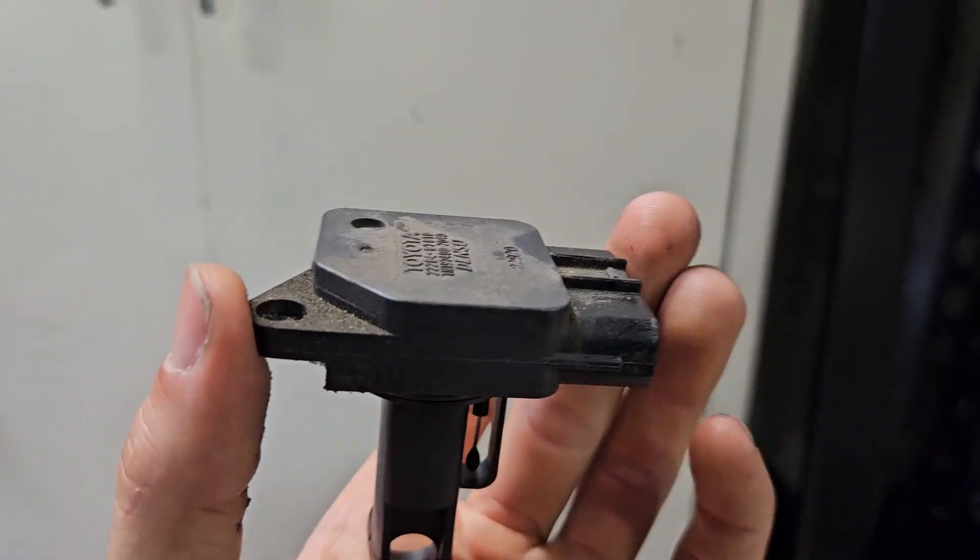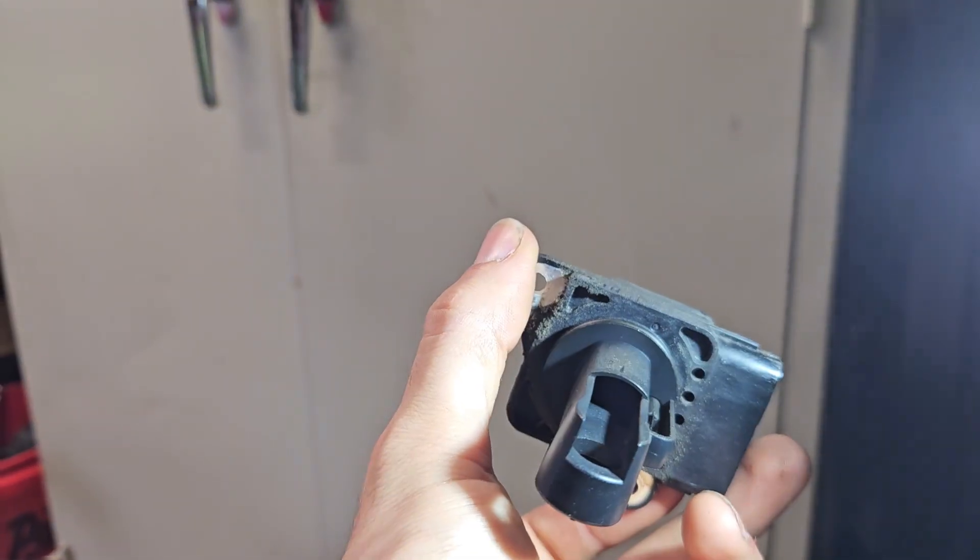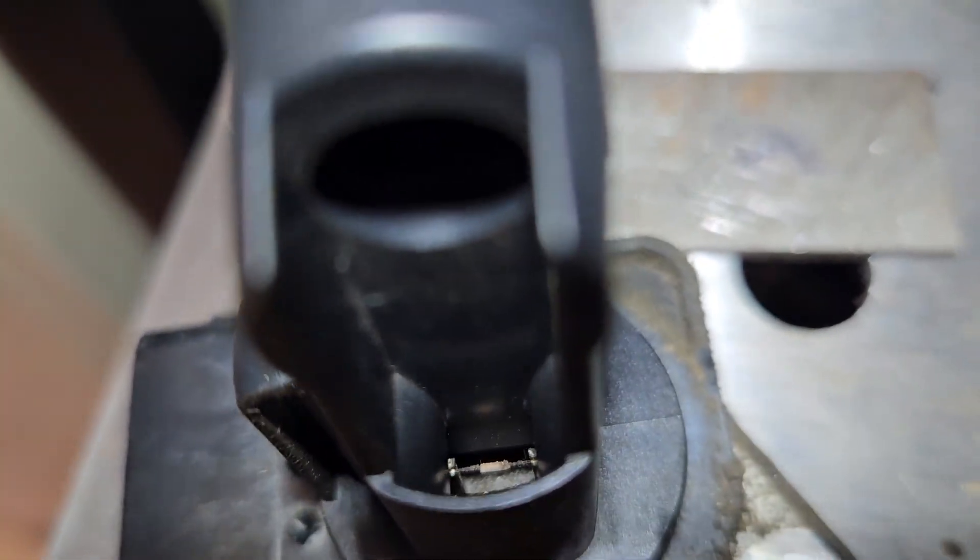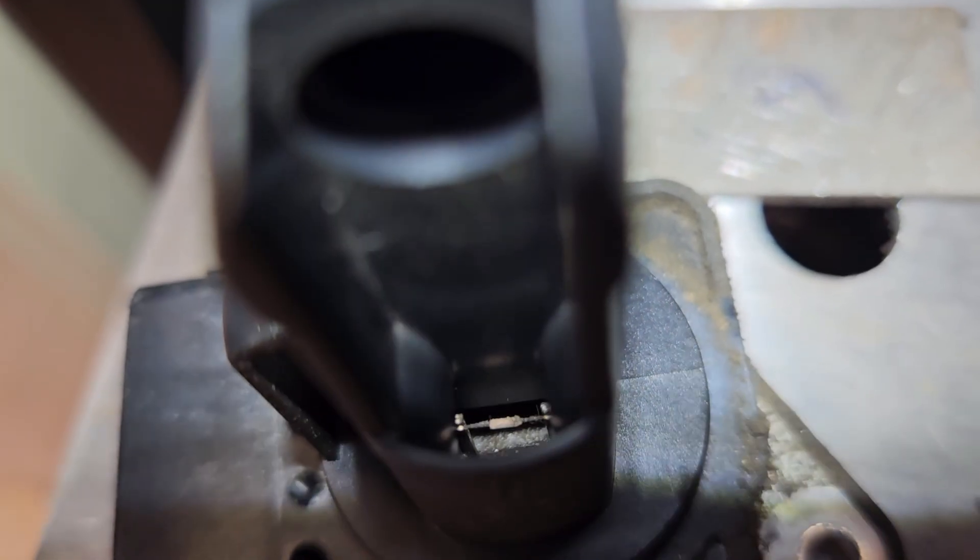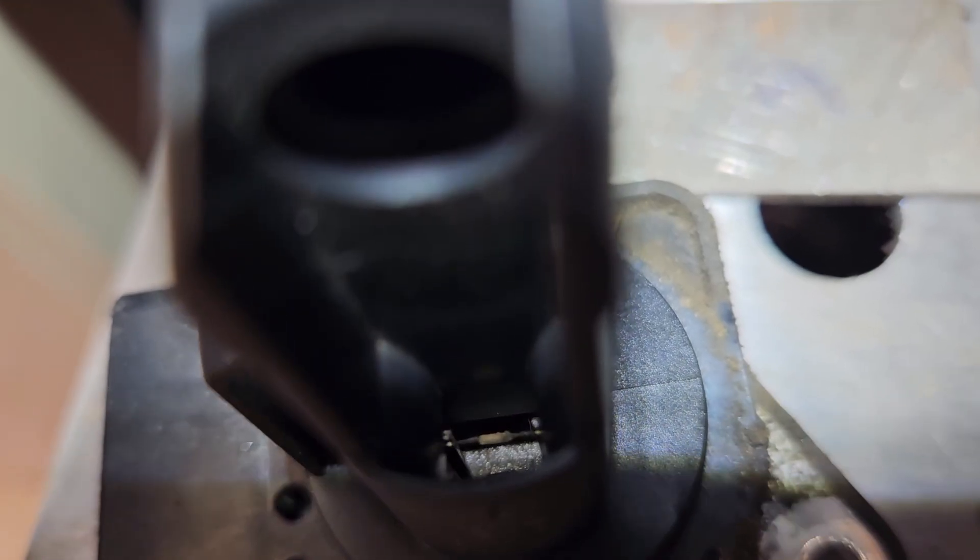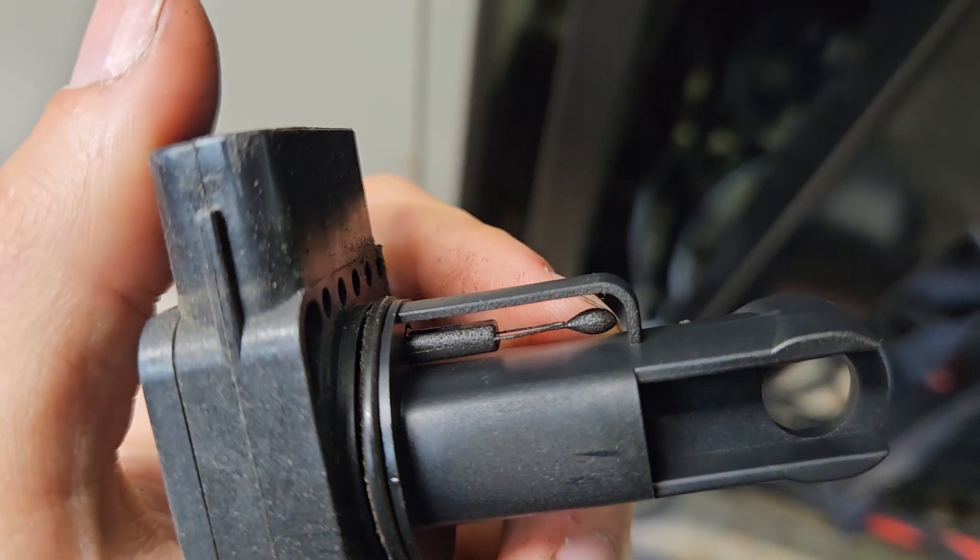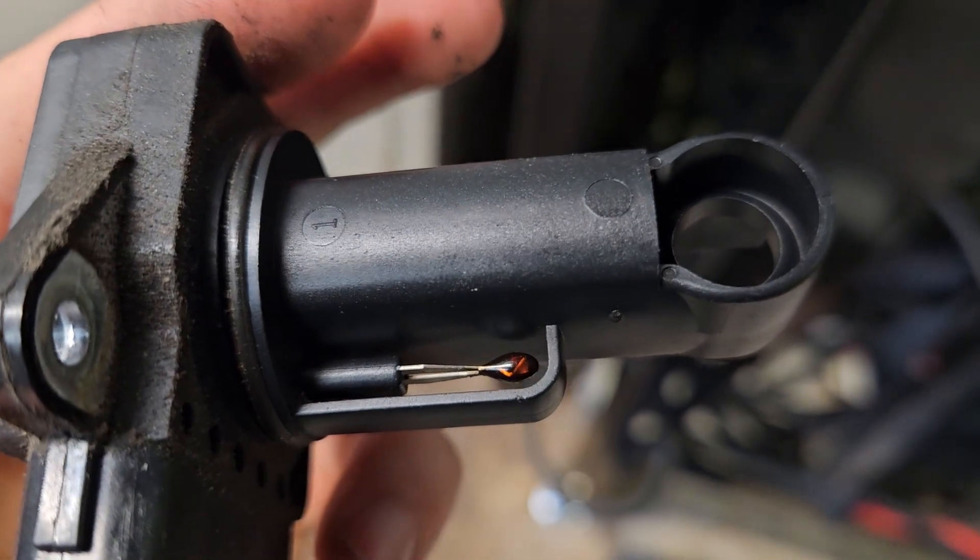So here I got the MAF sensor out and our sensing element is all the way in there. And we can see we have a bit of contamination on it. And our intake air sensor looks like there's some sort of residue on there. That's the side facing the air filter. That's the clean side.